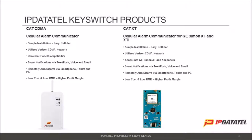IP DataTel offers two products in the KeySwitch lineup. The first is the CAT CDMA — our most universal and most popular in this category. It connects to any panel that communicates contact ID and is on the Verizon CDMA network. This device allows for signals to the central station as well as notifications. We also have the CAT XT, which is a snap-in module for the GE Simon XT and XTI specifically. Both of these products will do a simple arm and disarm.